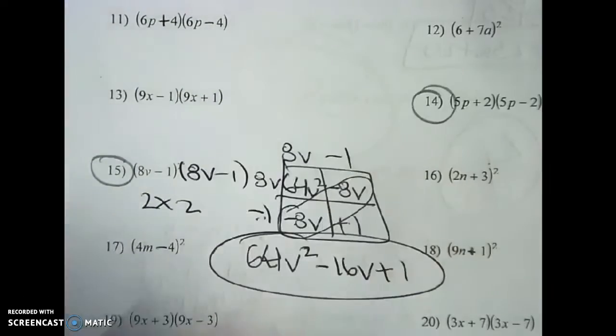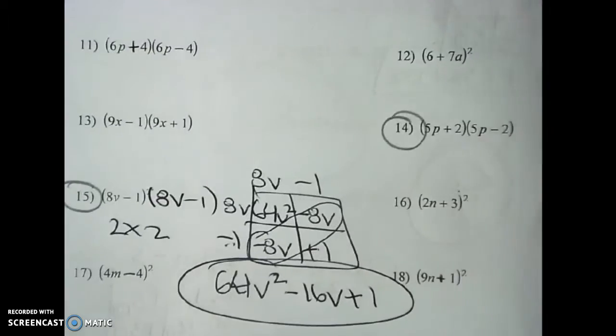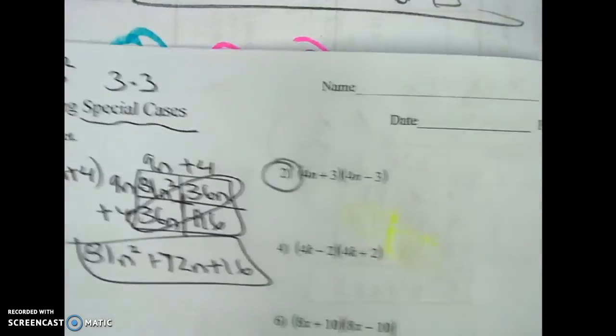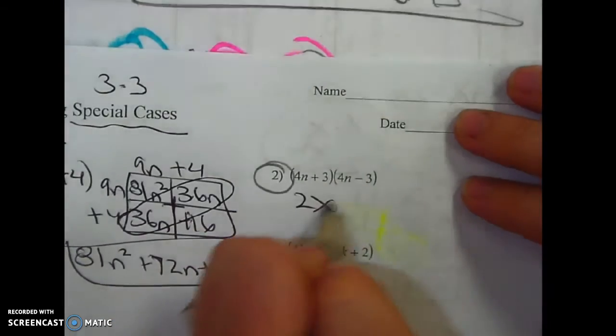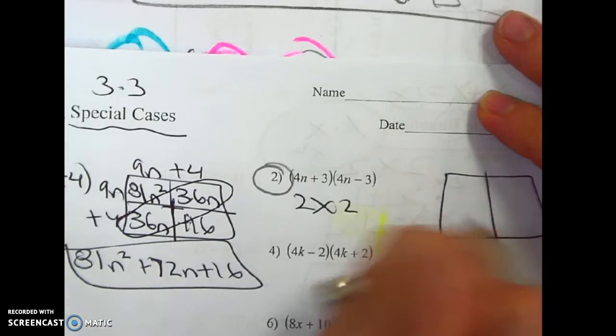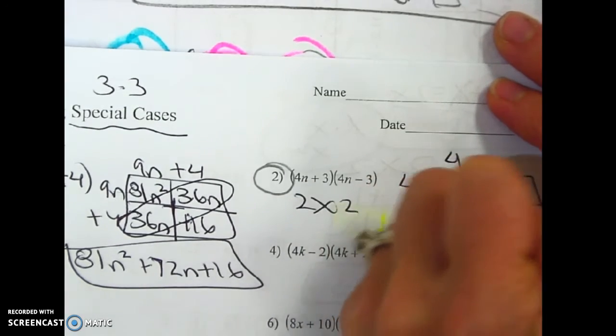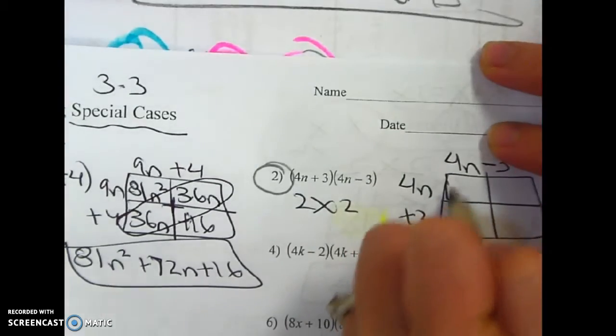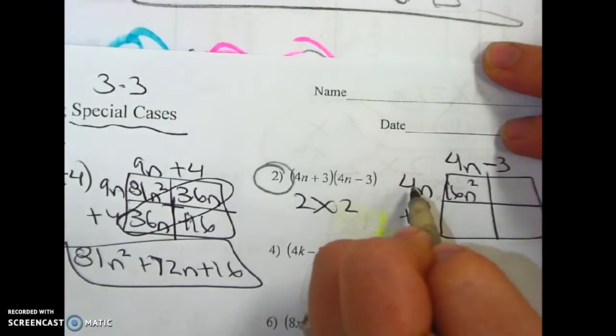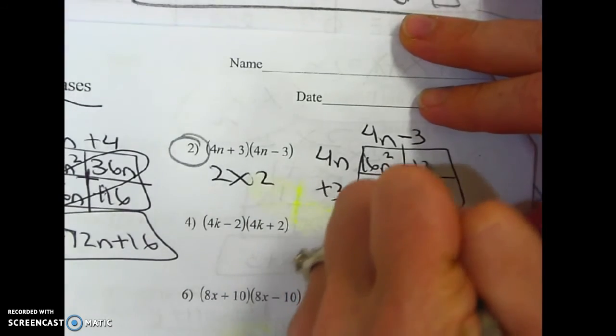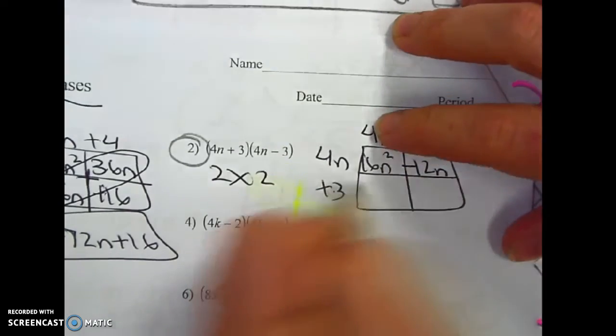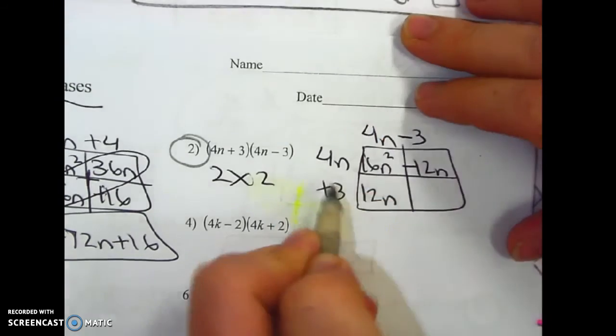Now there's another type of special case that's really similar, so we're going to go back to number 2. When you look at number 2, it's just as it is. It's a 2 by 2. But you'll see what's a little bit different about it. Multiply like you did before. 4 times negative 3 is negative 12N. 4 times positive 3 is positive 12N.